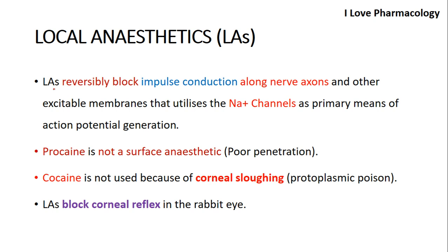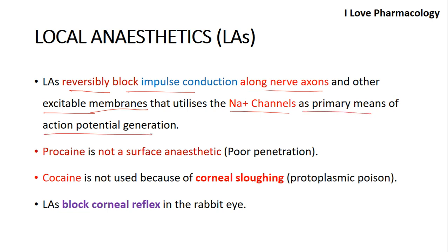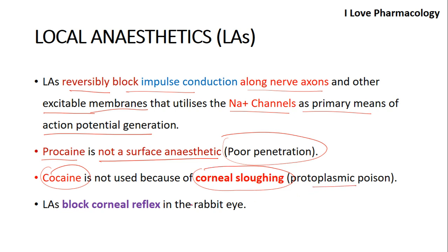Local anesthetics reversibly block impulse conduction along nerve axons and also block excitable impulses in membranes that utilize sodium channels. Essentially, local anesthetics are sodium channel blockers — there is blockage of action potential generation. Examples include procaine, which is not a surface anesthetic due to poor penetration; cocaine, not used mainly because of corneal clouding as it is a protoplasmic poison; and lignocaine (lidocaine), which mainly blocks the corneal reflex in the rabbit eye.